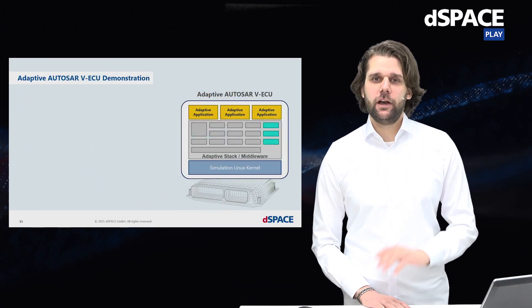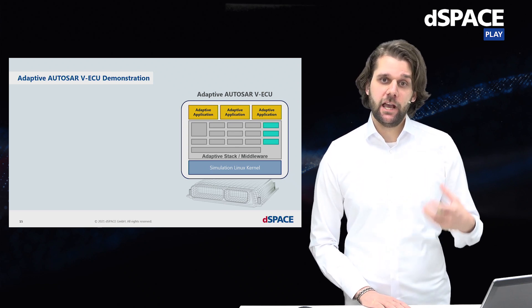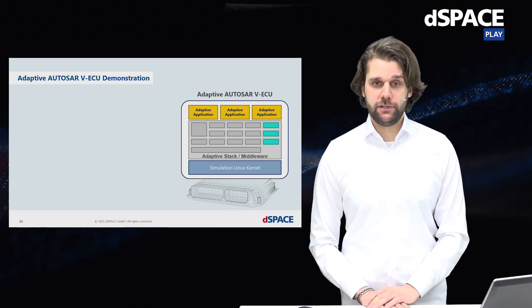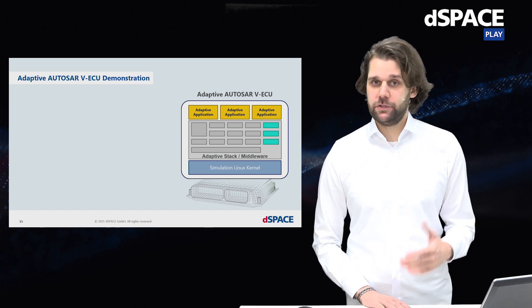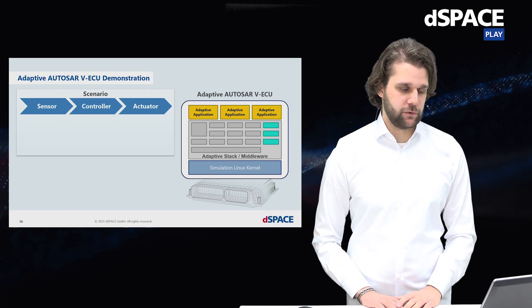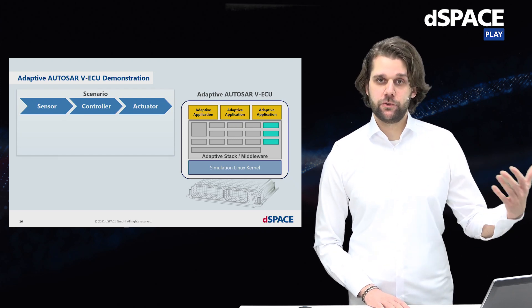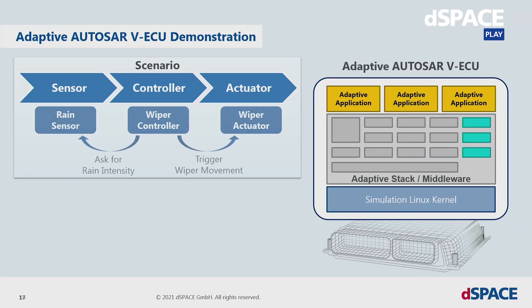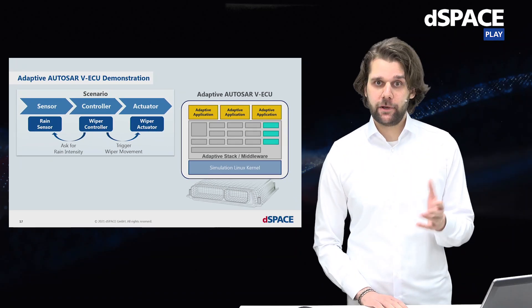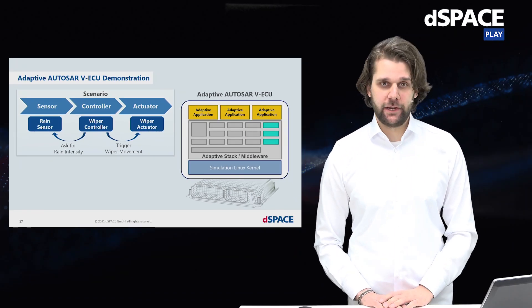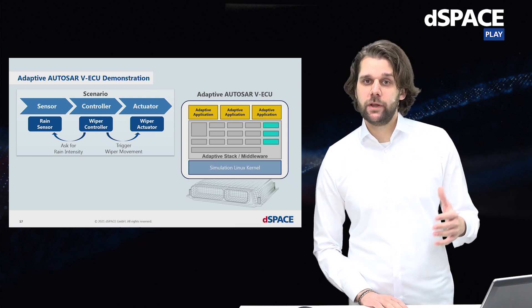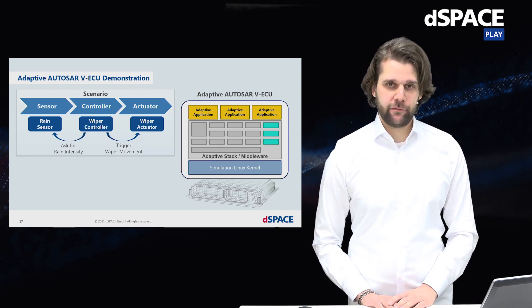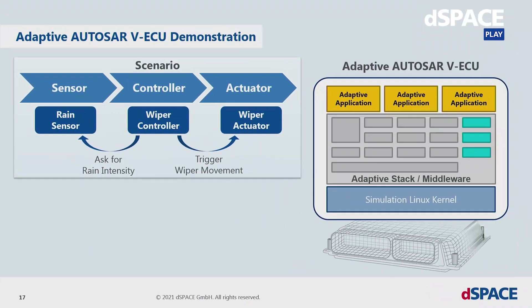Now I want to give you a short demo showing how to create and use an adaptive virtual ECU. I chose a generic scenario with a sensor, controller, and actuator — a typical component chain. The sensor is a rain sensor implemented as a software component that produces an artificial rain intensity. Our wiper controller asks for this rain intensity and decides whether to trigger a wiper, giving us a rain-controlled wiper.